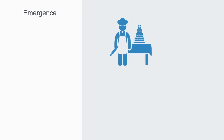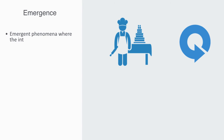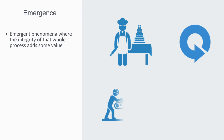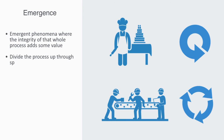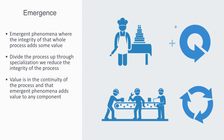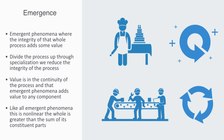The sense of achievement one gets when one goes through the full process of creating something might be an example of an emergent phenomenon — the integrity of that whole process adds some value to it. In contrast, when we divide the process up through specialization, asking a worker to do repetitive tasks on a production line, they become alienated from the end product and receive no value from it. As with our previous example, where value was added by the integrity of the context in space, the same is true of time: the value is in the continuity of the process, and like all emergent phenomena, this is nonlinear — the whole is greater than the sum of its constituent parts.